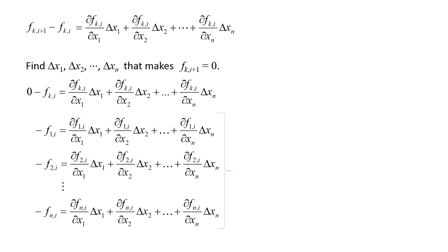These n equations are actually a set of linear equations. On the left, we have the functions f1 through fn evaluated at the current step i. We can calculate these equations since we know the variables x1 through xn at the current step. On the right, we have partial derivatives multiplied by delta x1 through delta xn.